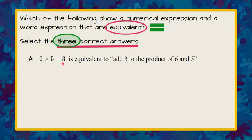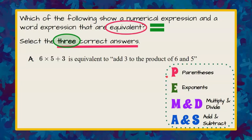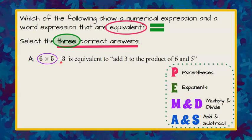Let's start with choice A. A states that six multiplied by five, add three — is it equivalent to 'add three to the product of six and five'? Reviewing order of operations: first we evaluate parentheses (none here), then exponents (none), then we multiply and divide left to right. So we multiply six times five first — that is the product of six and five — and then add three to it. That matches the word expression, so choice A is correct.